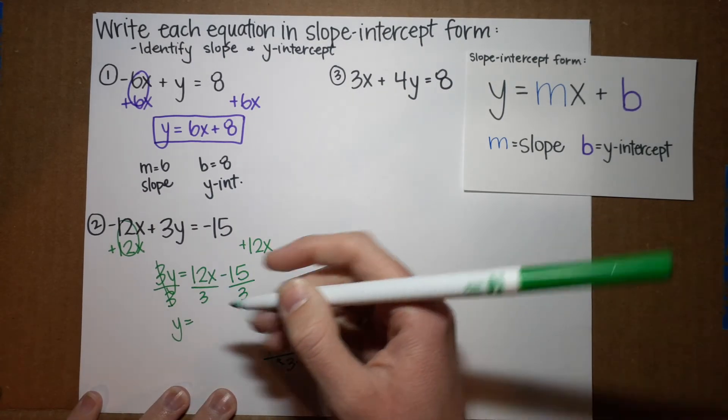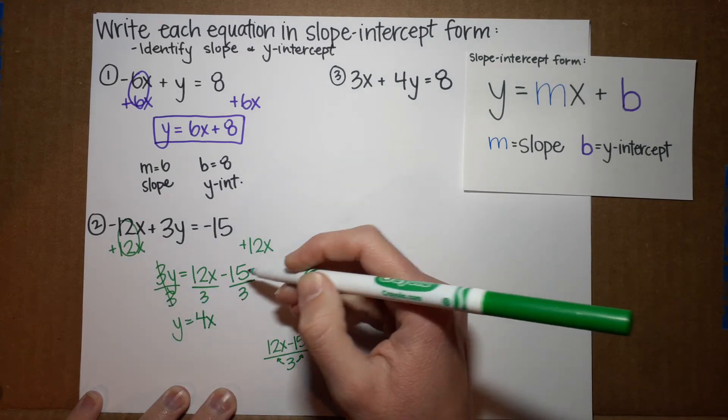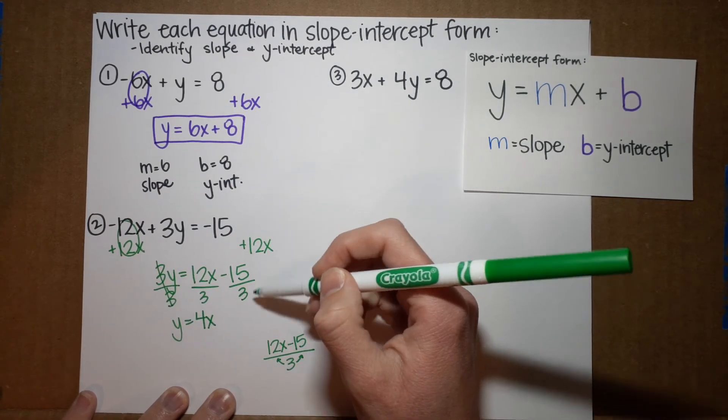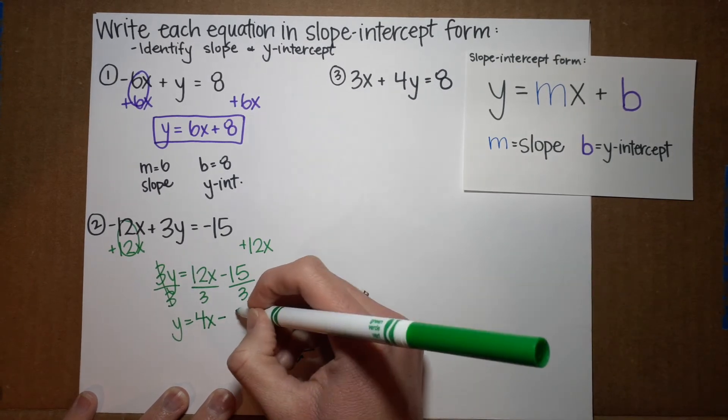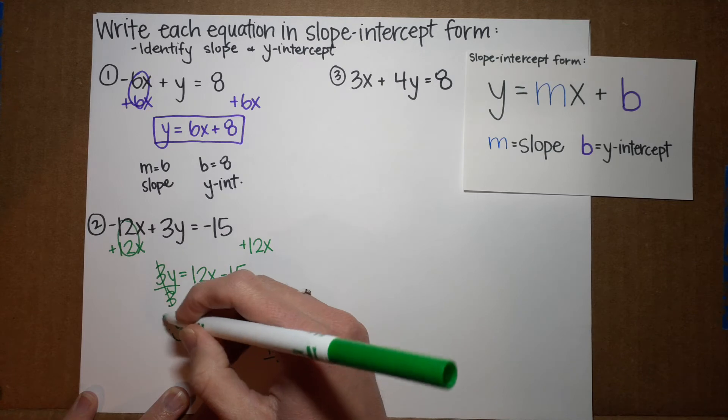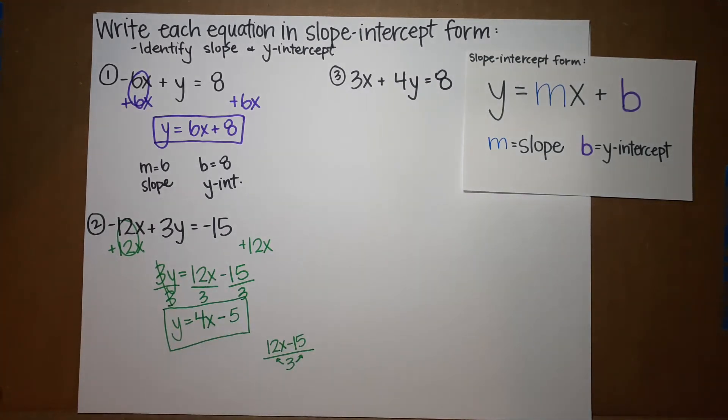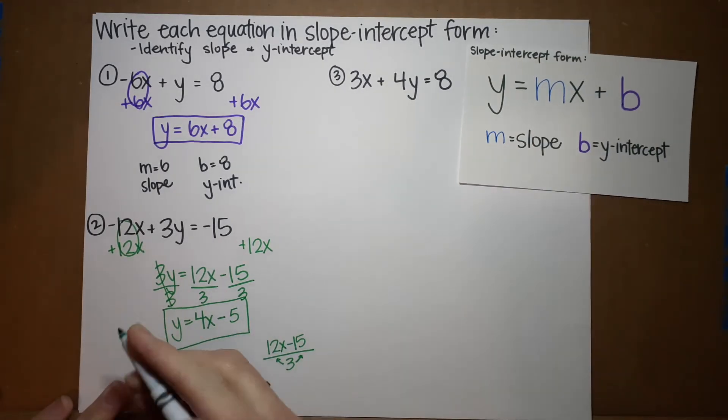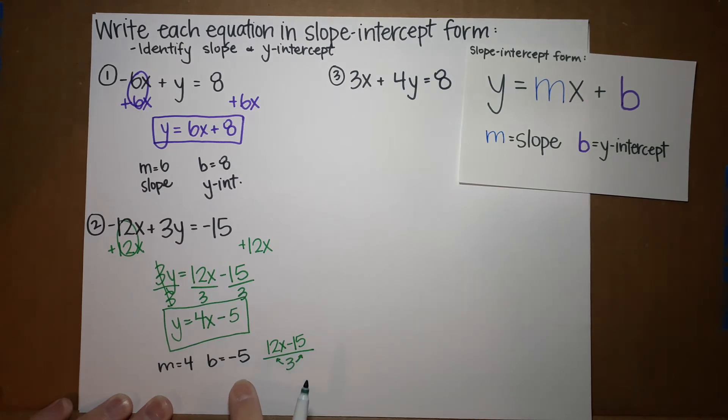That's an explanation for a different video. But, just for now, know that we can multiply and divide terms that aren't alike. Now, 12 divided by 3 gives me 4. I'm left with that x. And then, we've got a negative divided by a positive, which is going to be a negative. 15 divided by 3 is 5. Oh, my goodness. There's my answer. My m is 4. That's my slope. B is negative 5. That's my y-intercept.